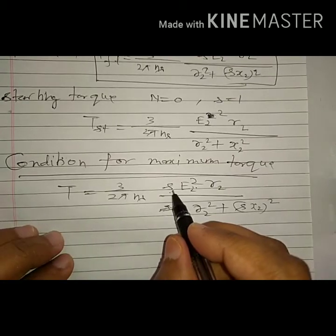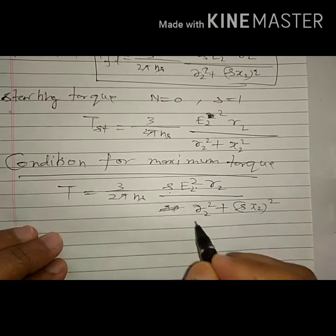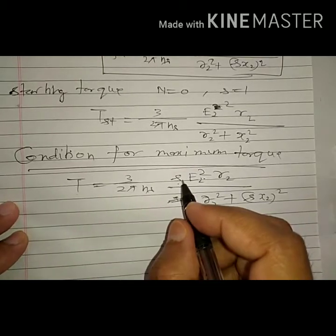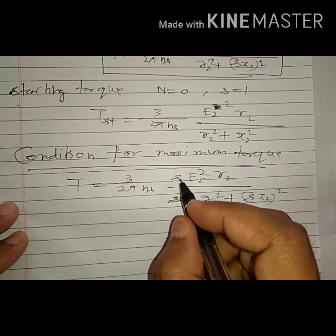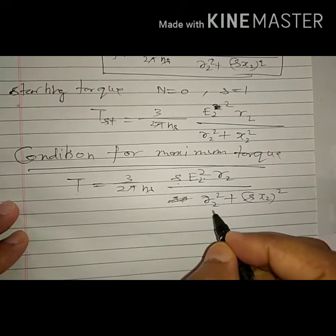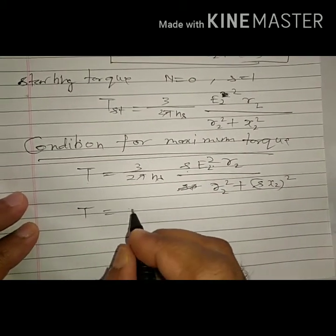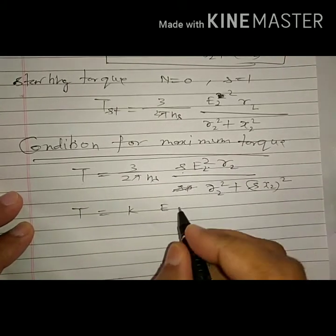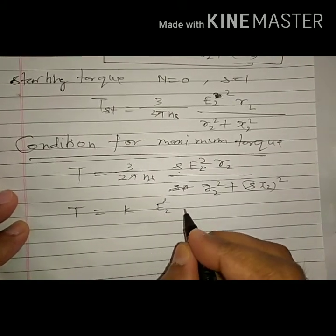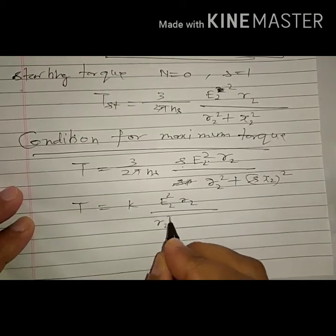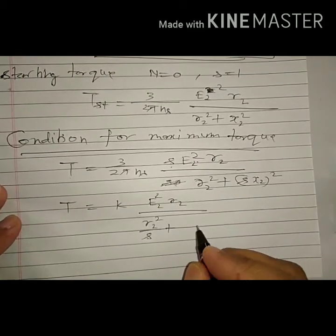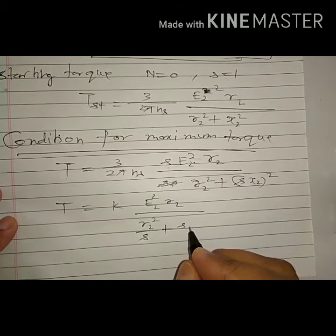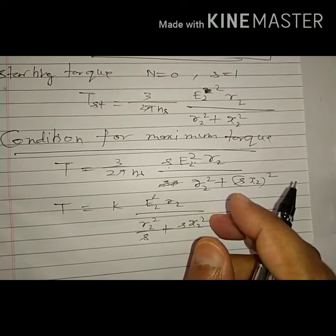To find the condition for maximum torque, differentiate torque with respect to slip. Since s appears in both numerator and denominator, simplify first by dividing numerator and denominator by s. This gives torque proportional to K * r2 / (r2²/s + s*x2²). Now the variable s appears only in the denominator.